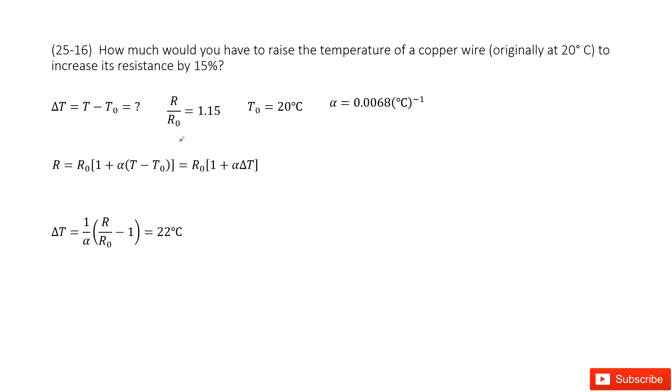So we list all the given quantities. The first one we can list is the ratio of final resistance with initial resistance, 1.15. This is from the 15%.